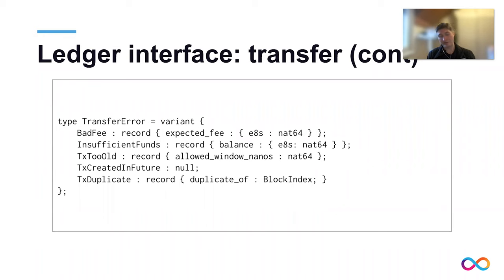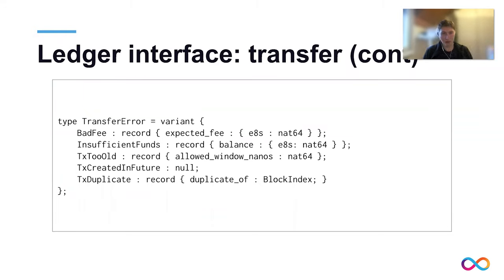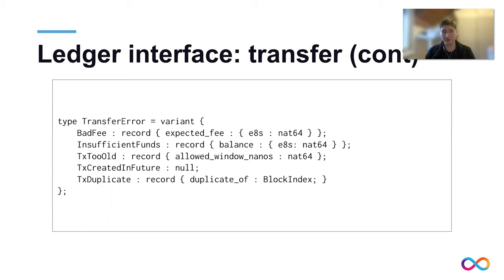If you specify a created-at-time which is too old — older than 24 hours — the ledger cannot efficiently check that this transaction was already executed, so it just rejects the transaction and you need to change the time to apply it again. If the time is too far in the future, the ledger also rejects your transaction. It always needs to be within bounds. You can also leave it out and the ledger will use the current time, but then you lose the ability to have idempotent application of the transaction.